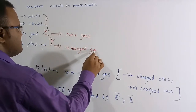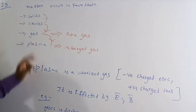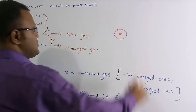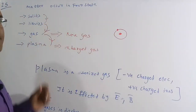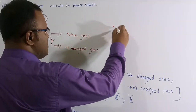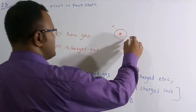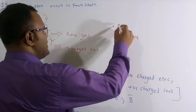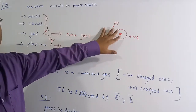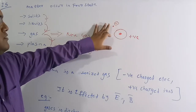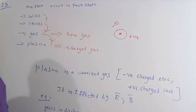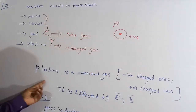In a normal gas atom, the nucleus contains neutrons and protons, and electrons orbit around it. But for plasma — when you give energy (heat) to this atom, the electron becomes free and comes outside. So the atom becomes a positive ion and the free electron carries a negative charge. This is why plasma is called a charged gas or ionized gas — it contains positive ions and free electrons.